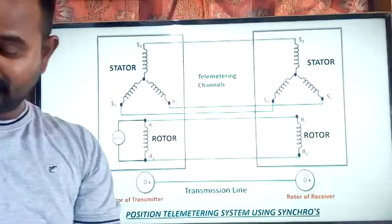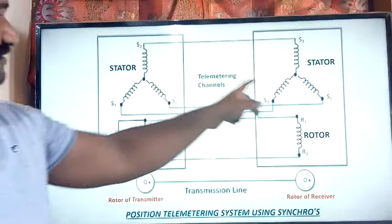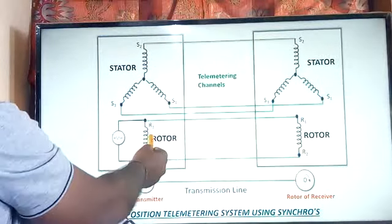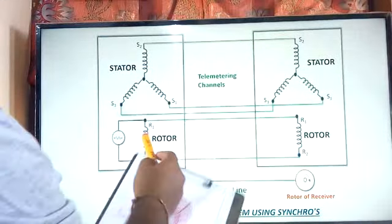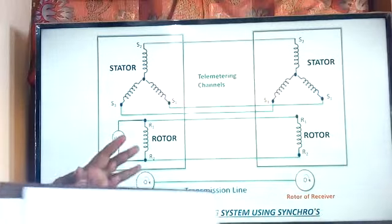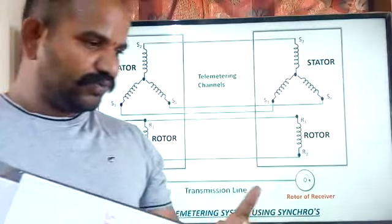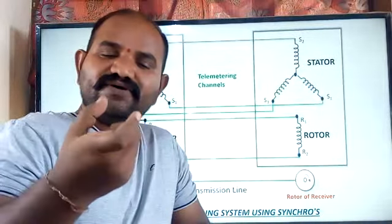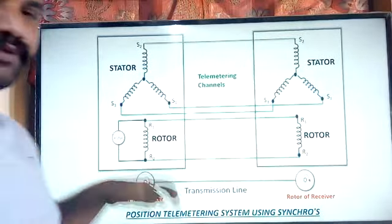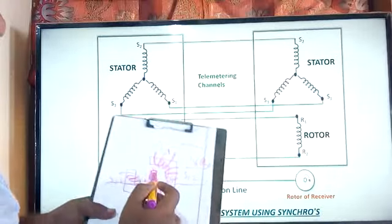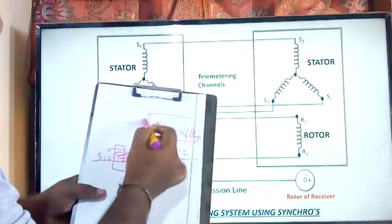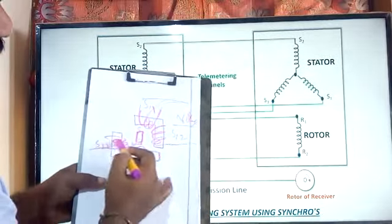We are using this concept in the synchro transmitter and receiver. Here, I assume this is a synchro transmitter and this is a synchro receiver. The rotor is indicated using a coil at both the transmitting and receiving ends. The transducer which converts the physical quantity into electrical energy is connected to this rotor. When the rotor changes its position due to the measured value, this change induces EMF into the stator coils, and the same change is reflected at the receiving end.